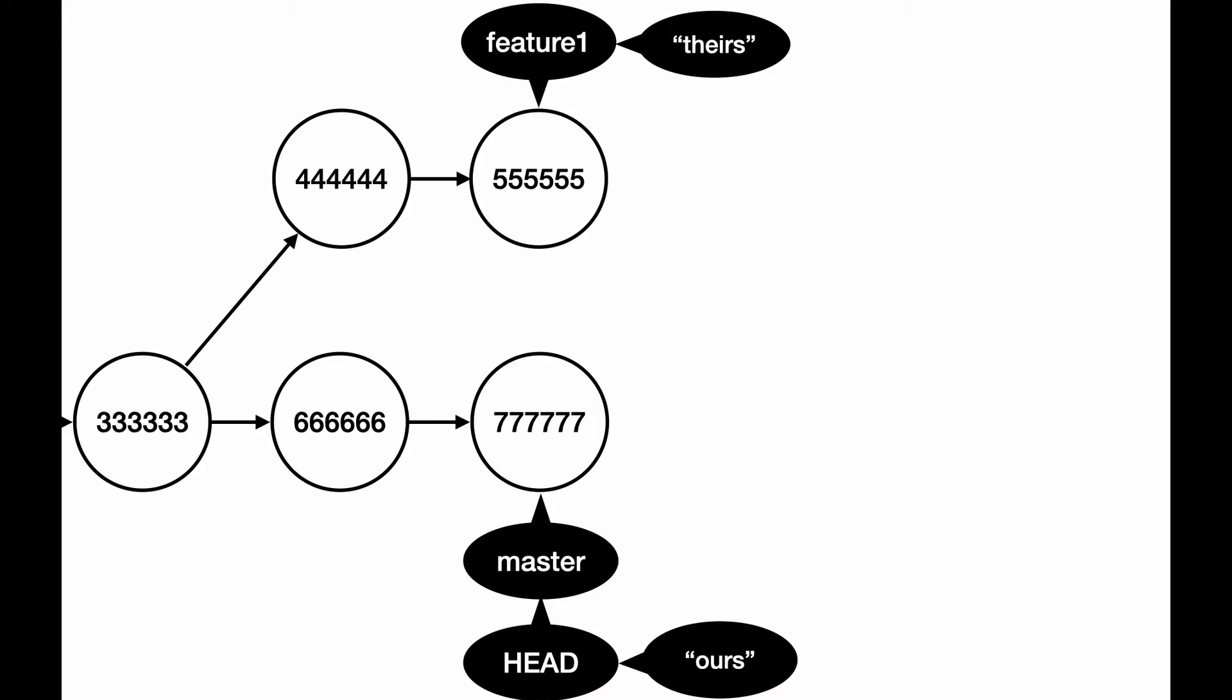And we should also talk about ours and theirs. Ours generally refers to commits that are tracking along with the HEAD playhead, the git playhead, where theirs refer to commits on the branch that is being merged in, in this case.